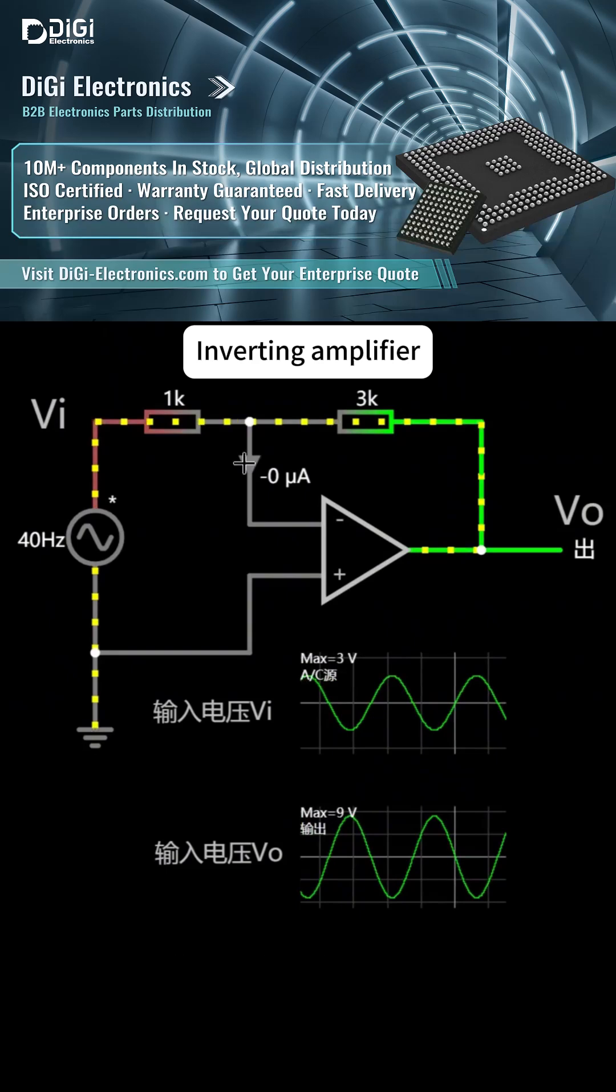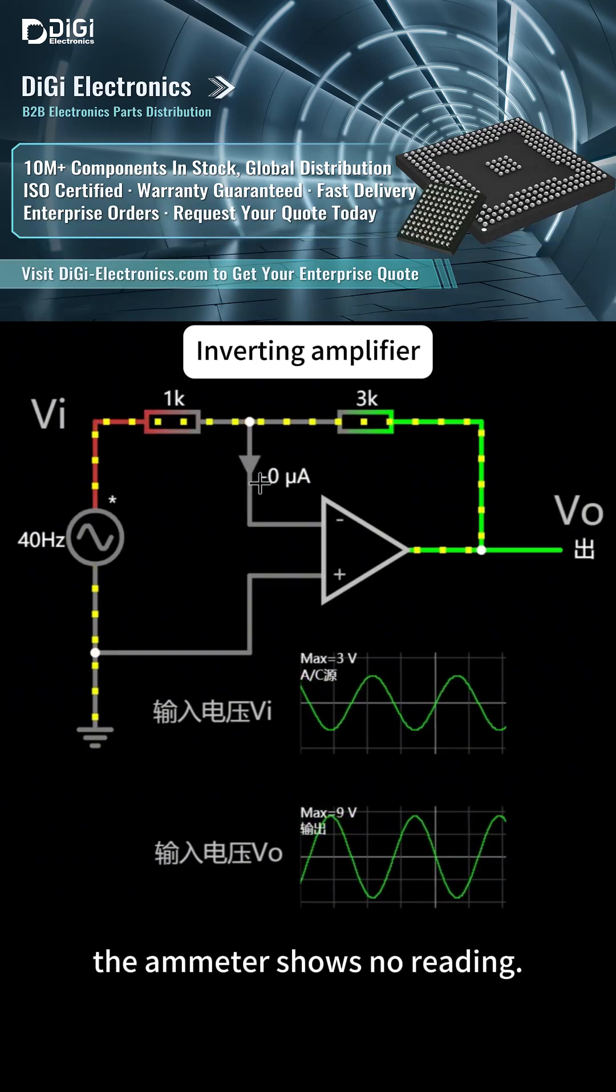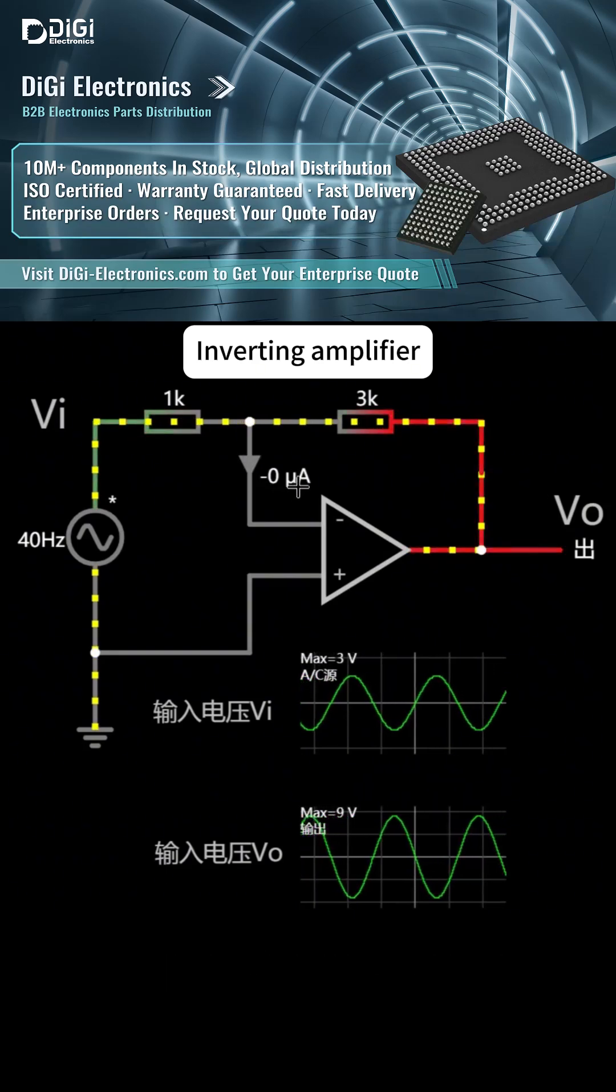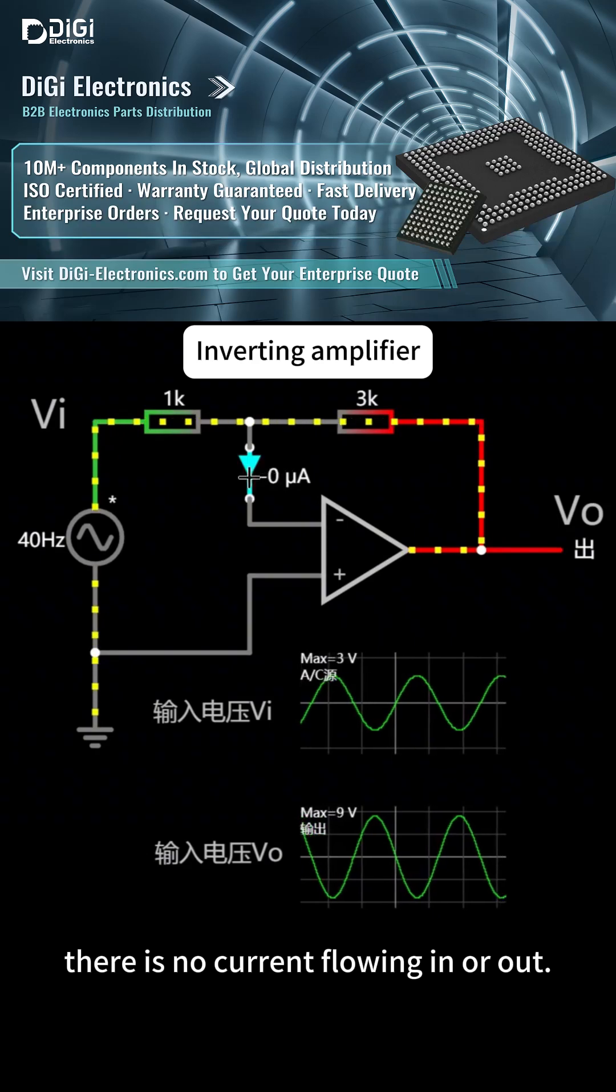As you can see, the ammeter shows no reading. This proves there is no current flowing in or out.